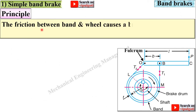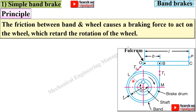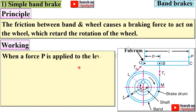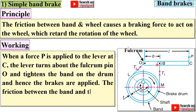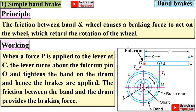The principle: the friction between the band and wheel causes a braking force to act on the wheel, which retards the rotation of the wheel. Working: when a force P is applied to the lever at point C, the lever turns about the fulcrum pin O and tightens the band on the drum, and hence the brakes are applied. The friction between the band and the drum provides the braking force.